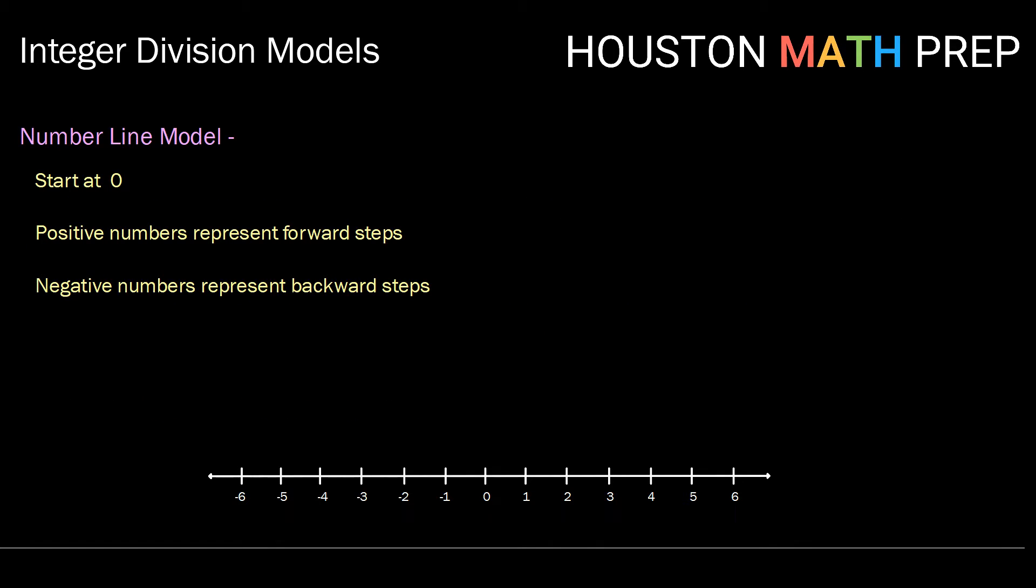So here's how integer division works. You're going to start at zero. Just like with all the other models or all the other operations and the number line model, positive numbers represent forward steps and negative numbers represent backward steps.